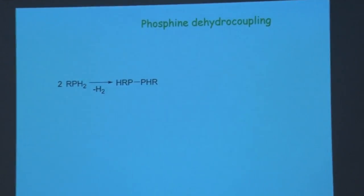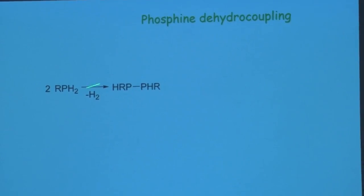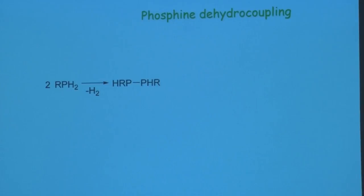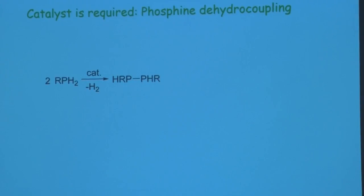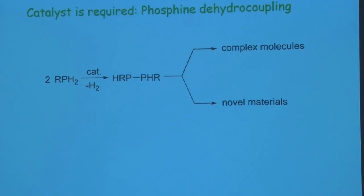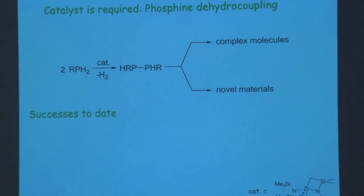One kind of catalysis is based on phosphine dehydrocoupling — taking an organophosphine, making a phosphorus-phosphorus bond, with hydrogen gas as byproduct. Phosphine dehydrocoupling absolutely requires the catalyst; it's a symmetry-forbidden reaction — you can't bring the P-H bonds together in an effective way to make H2. We targeted this reaction because we could make new complicated molecules as precursors, or make interesting materials. We've been focused on these zirconium catalysts.